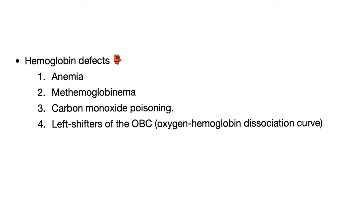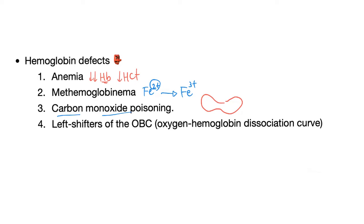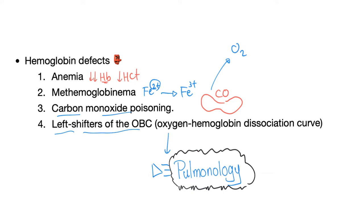Again, causes of hypoxia are ischemia, hypoxemia, and hemoglobin-related defects. Hemoglobin-related causes include: anemia — which decreases hemoglobin concentration and red blood cell mass, giving low hemoglobin and low hematocrit; methemoglobinemia — which converts Fe2+ (the iron that can bind oxygen) into Fe3+ that cannot bind O2, leading to hypoxia; carbon monoxide poisoning — CO has a great affinity for hemoglobin, binds to it and kicks oxygen out; and left-shifters of the oxygen dissociation curve.